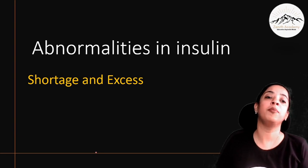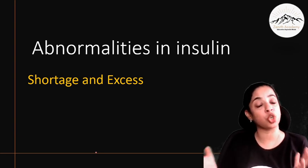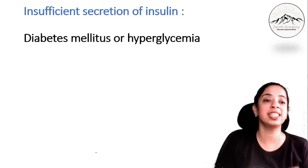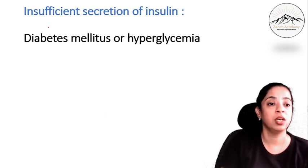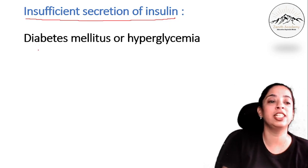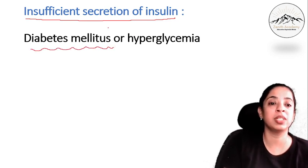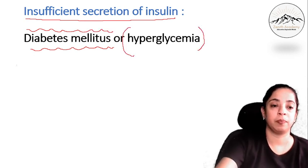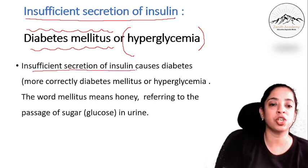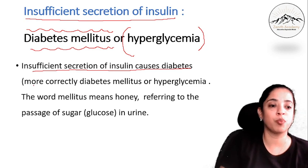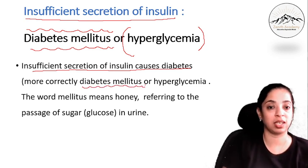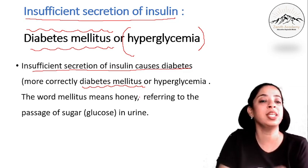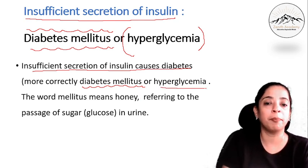Now let's talk about abnormalities in insulin — what happens when there is a shortage or excess of insulin. Insufficient secretion of insulin leads to diabetes mellitus. Its other name is hyperglycemia. Insufficient secretion of insulin causes diabetes — more accurately diabetes mellitus — where the sugar level increases. This type of diabetes is known as diabetes mellitus or hyperglycemia.